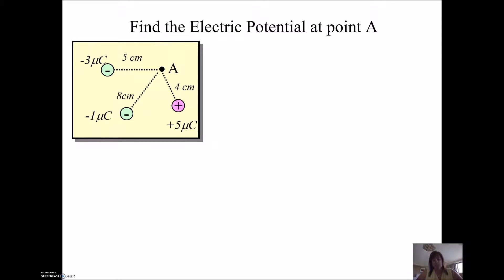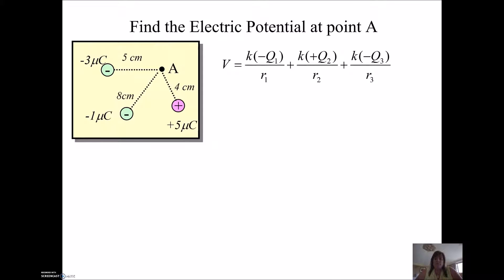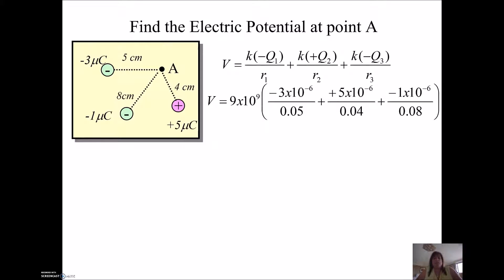Let's do a problem. Let's stick some numbers here — calculate the electric potential at point A. Pause the video and see if you can get this right. If you plug these in, make sure you use the sign of the charge. Remember micro is times 10 to the negative 6, and you need to work in meters, so divide those numbers by 100 — the 5 becomes 0.05. Don't square them — this is not force or electric field, this is energy, so it's just a single R. If you did it right, you should get 4.73 times 10 to the 5th volts. Remember that the unit of potential is the volt.